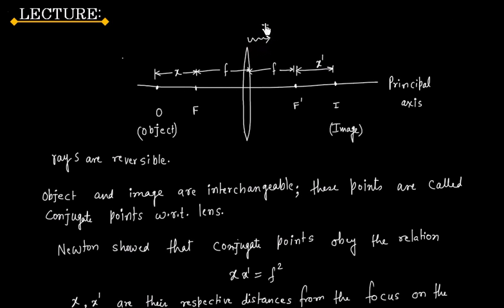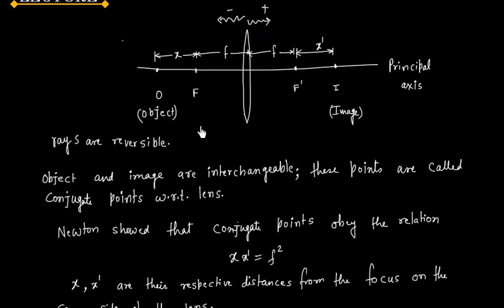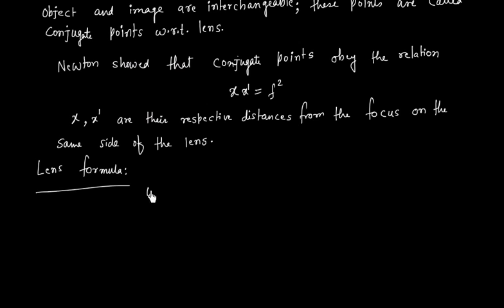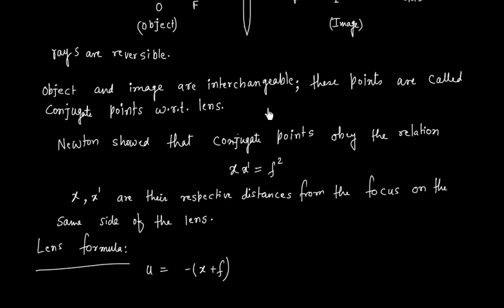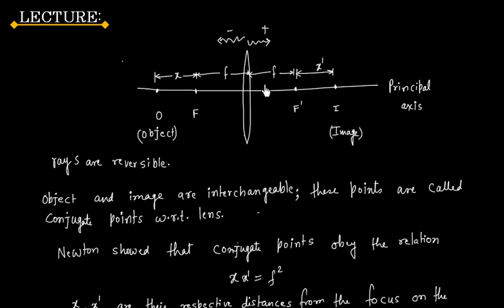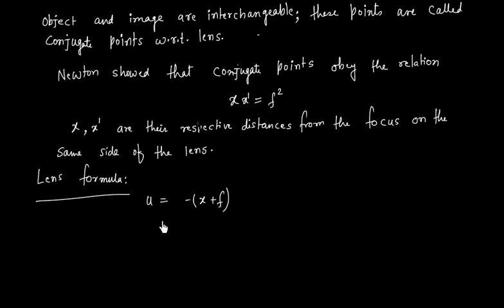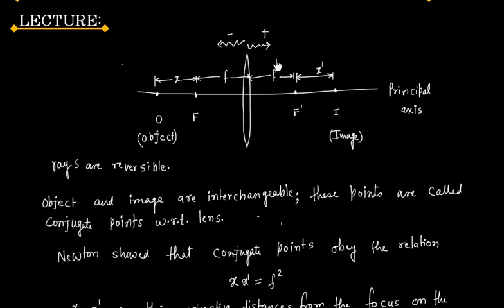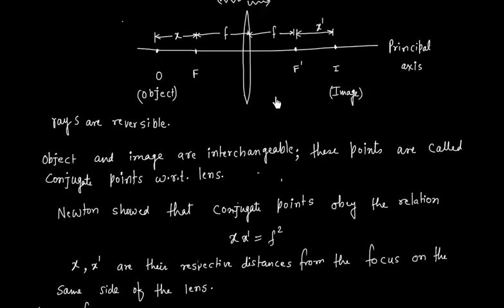In this direction we will have positive and in this direction we will have negative. So object distance is X plus F and this is negative. Image distance is X dash plus F and this is positive. Focal length in this direction, because we have object in this direction, so focal length is positive.